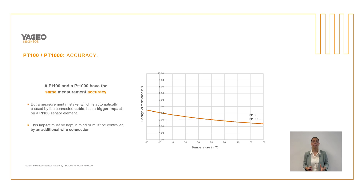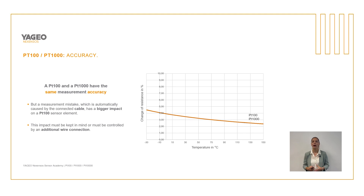However, a long cable lead can cause a measurement error. The length of the cable has a greater influence on the PT100 sensor, so accordingly, with a long cable, the PT1000 is preferred. Alternatively, a three- or four-wire connection can be used to minimize this influence.